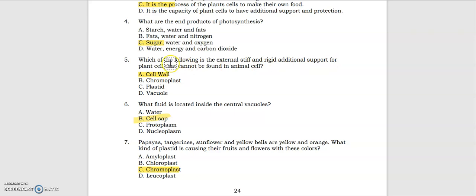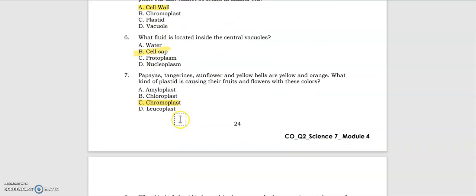Number six: what fluid is located inside the central vacuole? The answer is cell sap, letter B. Number seven: papayas, tangerines, sunflower and yellow bells are yellow and orange. What kind of plastid is causing their fruit and flowers with these colors? That's the chromoplast. Number eight: what kind of plastid is located in the roots and other non-pigmented parts of the plants that store starch, carbohydrates, proteins, and fats? It's the leucoplast.